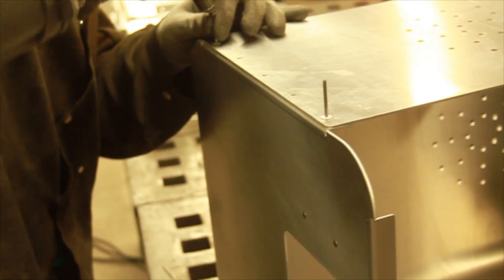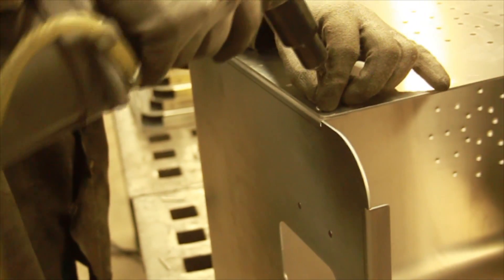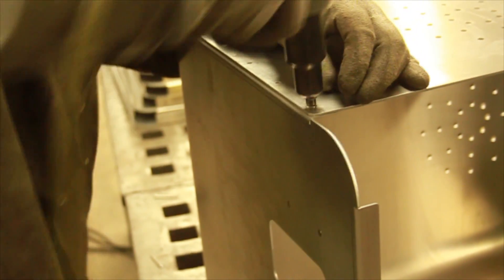Now on to assembling the part. First, rivets are used to attach each part together. These add strength to the part, as well as lining them up for welding.